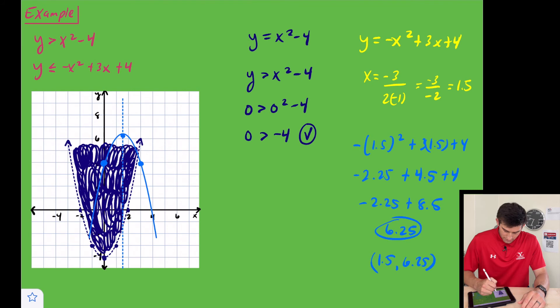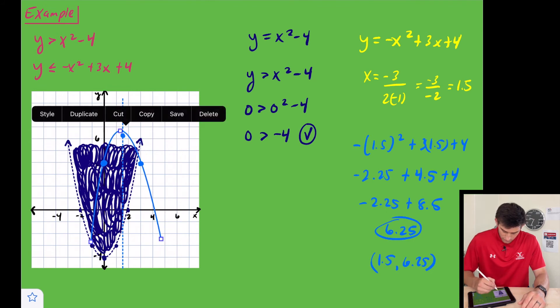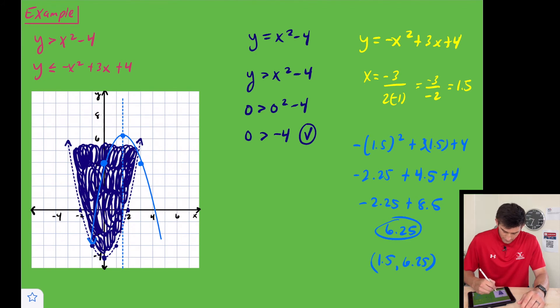Now we're going to draw our parabola going down here. Make sure I get it through my points. I think that looks pretty good. Now we'll put our arrows on the end of this one. For this one we have a less than or equal to, so we're going to leave it solid.